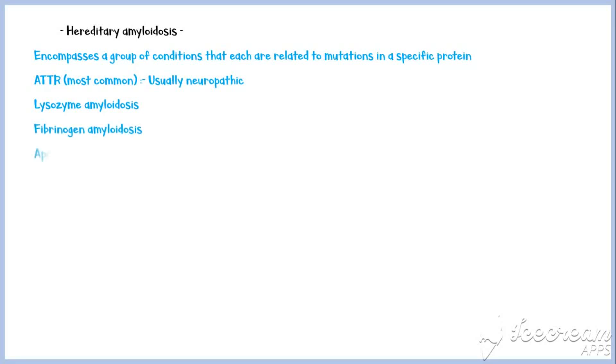Hereditary amyloidosis encompasses a group of conditions that each are related to mutations in a specific protein. Transthyretin amyloidosis is the most common form, which is usually neuropathic. We have already discussed about ATTR in systemic amyloidosis. Other types of hereditary amyloidosis include lysozyme amyloidosis, fibrinogen amyloidosis, APOA1 and A2 amyloidosis, and gelsolin amyloidosis.